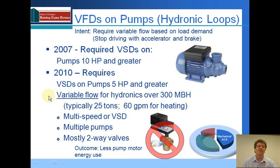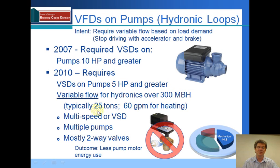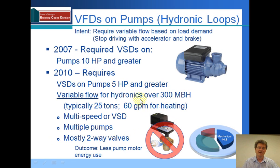There's also a new requirement for variable flow. The old requirement had variable speed drives required when there was variable flow. The new requirement says you shall have variable flow whenever you've got a system larger than 300,000 BTUs per hour — typically 25 tons of cooling or about 60 gallons per minute on a heating water pump. There's also a requirement for multiple speed, variable speed drive, or multiple pumps. As far as compliance, it's mostly going to involve two-way valves. If you see a system where all the valves are three-way valves, that is probably not a compliant system unless it's smaller than these limits.